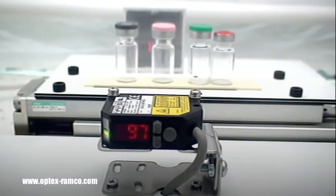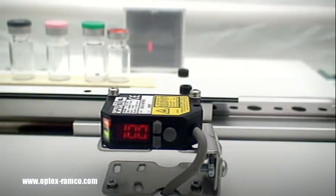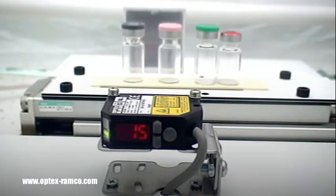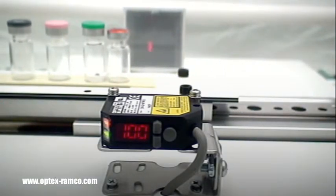One good application example for this is to have the sensor mounted on the line, ignoring bottles as they pass by. But if something happens and the bottles begin to stack up, it will be in front of the sensor for more than a couple of seconds, and then the output will turn on notifying the operator.